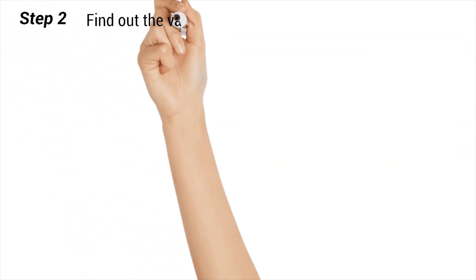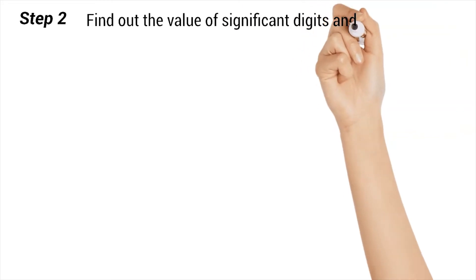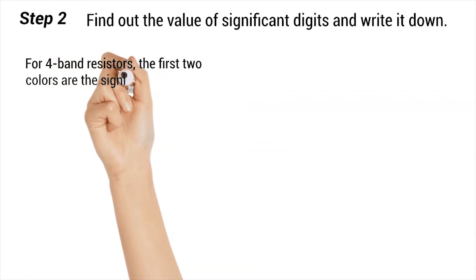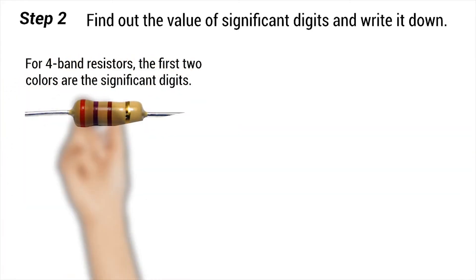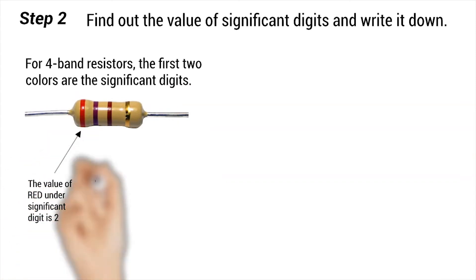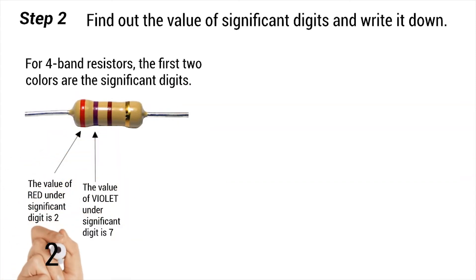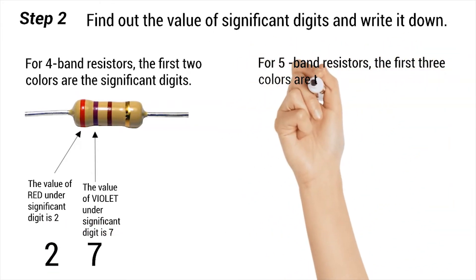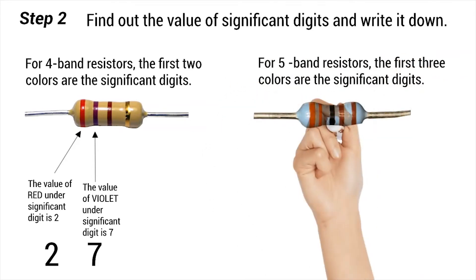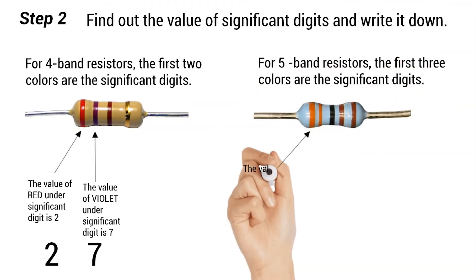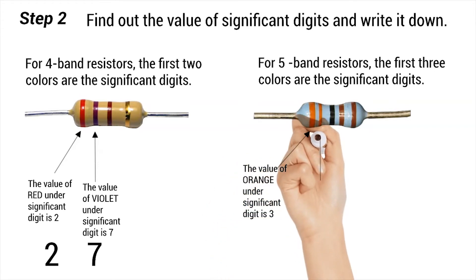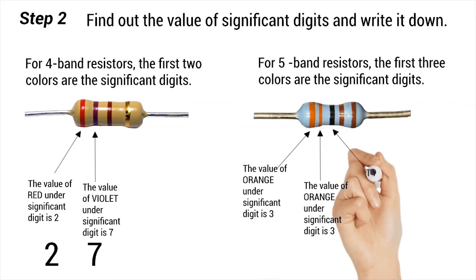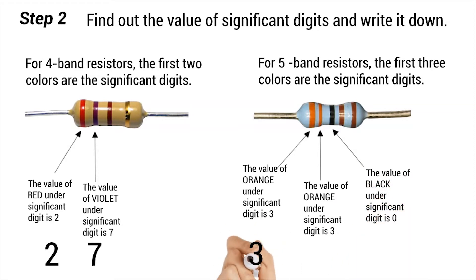Step two: find out the value of significant digits and write it down. For four-band resistors, the first two colors are the significant digits. The value of red under significant digit is two. The value of violet under significant digit is seven. For five-band resistors, the first three colors are the significant digits. The value of orange under significant digit is three. Since the second color is the same as the first, its value is again three. The value of black under significant digit is zero.